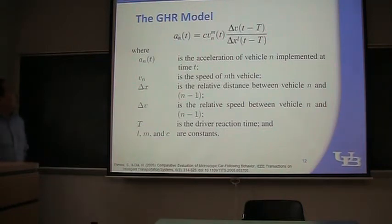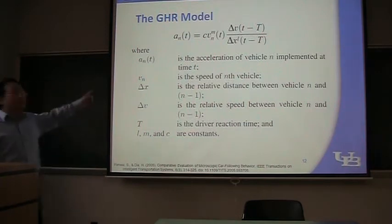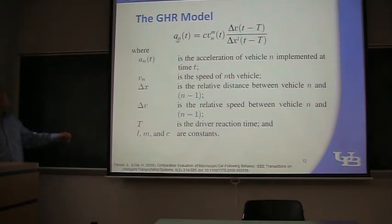So here, on the left of the equal sign is a_N, which is the acceleration at the time t. N means the vehicle N. If the first vehicle in the queue is vehicle 1, then the Nth vehicle is vehicle N. So to the left is the acceleration of the Nth vehicle at time t. And the delta V and delta X relative speed and distance are for time t minus capital T. Here the capital T represents the driver reaction time.